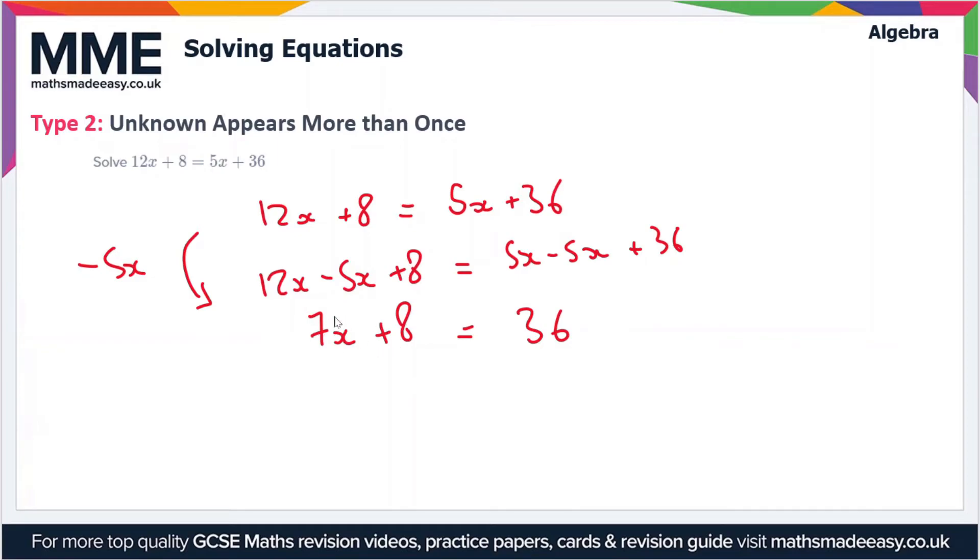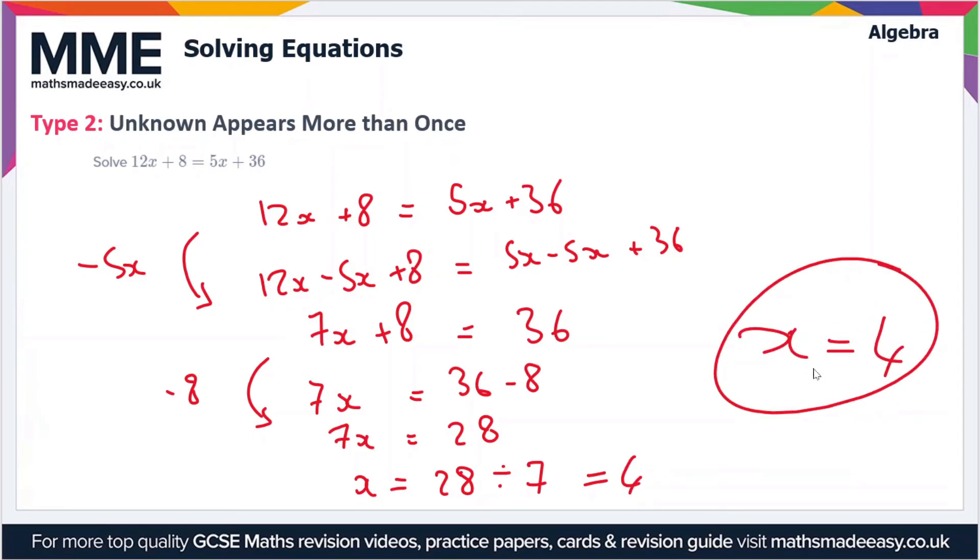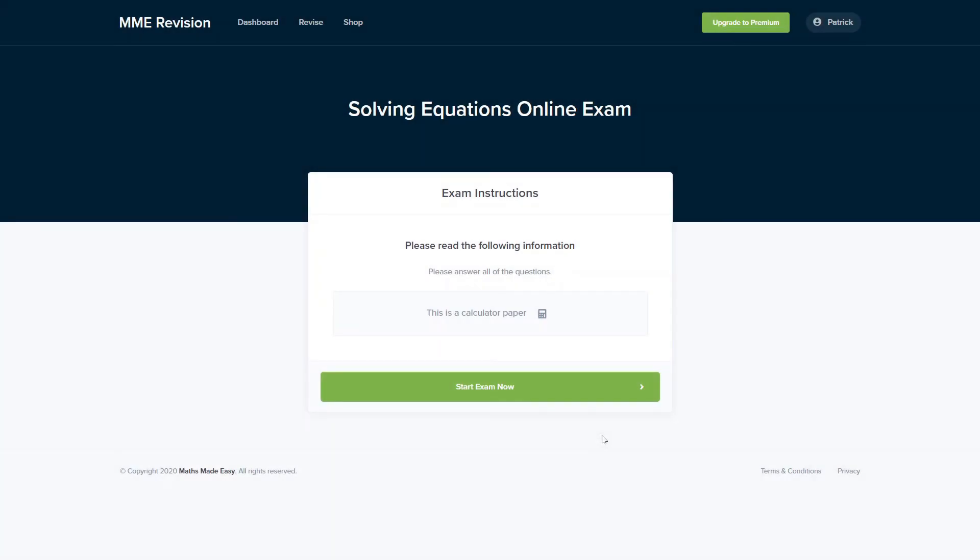To do that, we minus 8, so we get 7x is equal to 36 minus 8. So 7x is equal to 28. Now all we have to do is divide by 7 to get x on its own, so x is equal to 28 divided by 7, and that's equal to 4. So our answer is that x is equal to 4.